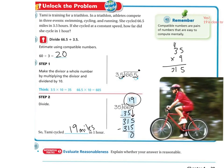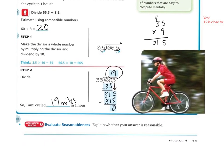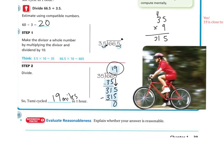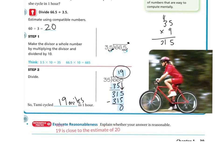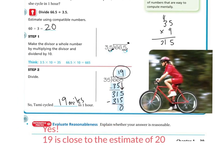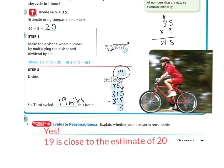Evaluate reasonableness. Explain whether your answer is reasonable. Yes, because 19 is close to my estimate of 20. So therefore, it must be reasonable.